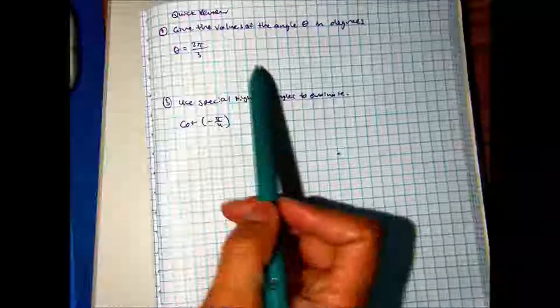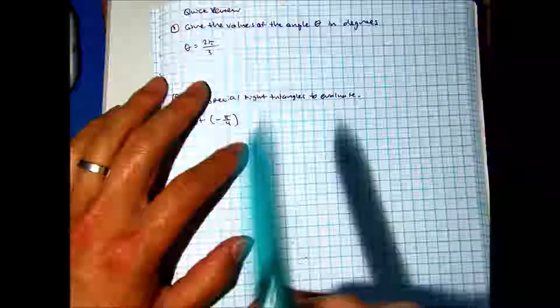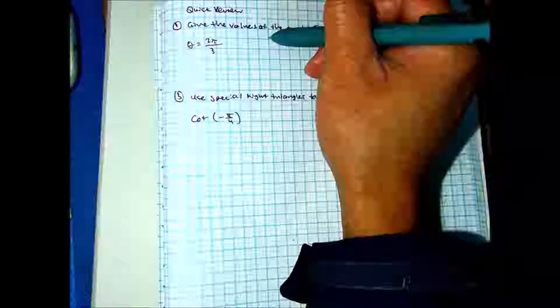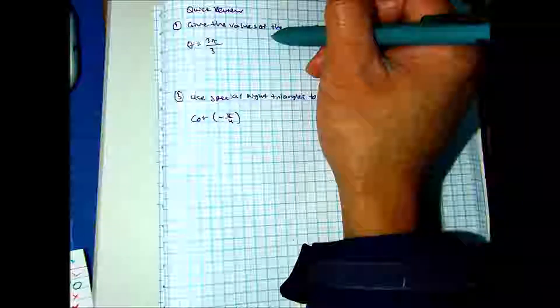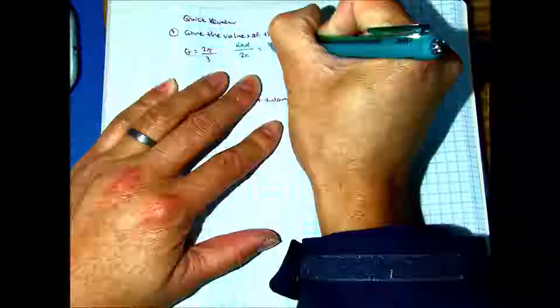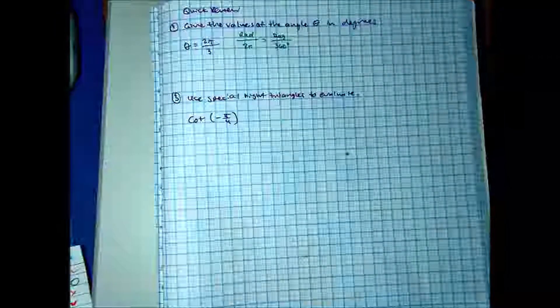Partner A, tell Partner B the formula you should be using. Which formula should we be using? Radians over 2 pi equals degrees over 360. There were two questions on your last quiz — students who missed the multiple choice question just didn't write down that formula.